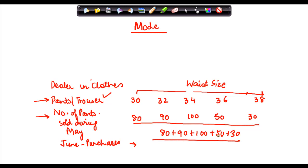And the number of variables are 1, 2, 3, 4, 5. So what is the answer that I get? This gives me 350 by 5 which is 70.